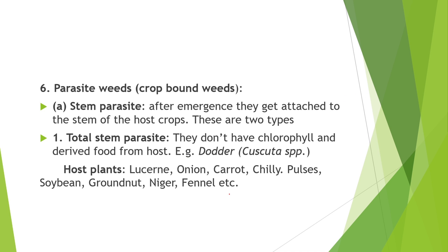Next is classification of parasitic weeds — classified into stem parasite and root parasite. Stem parasites emerge and attach to the stems of host crops. They are of two types: total stem parasites (no chlorophyll, derive food from host plant) — example Cuscuta species, whose host plants include lucerne, onion, carrot, chilli, pulses, soybean, mustard, niger, and fennel.